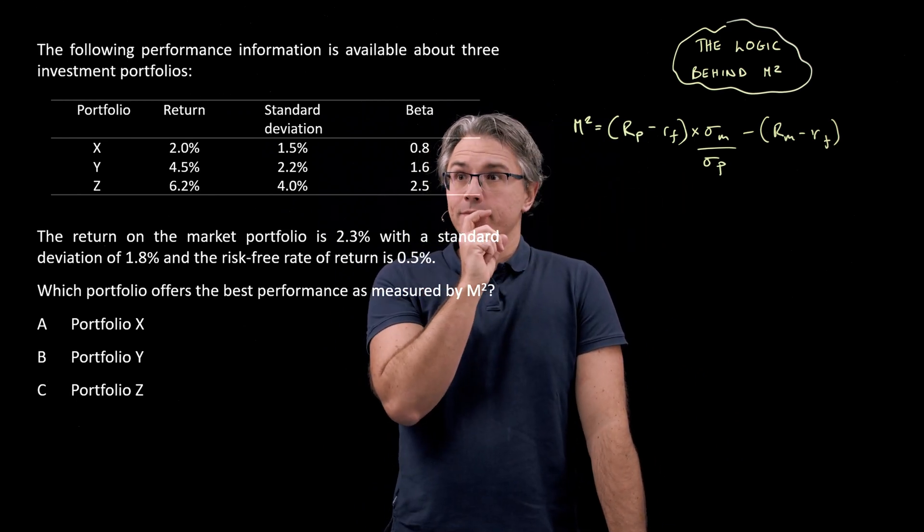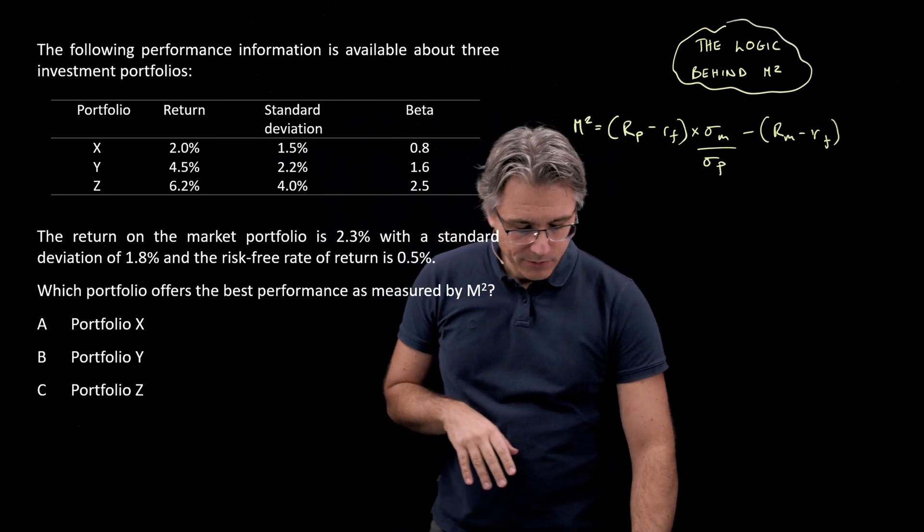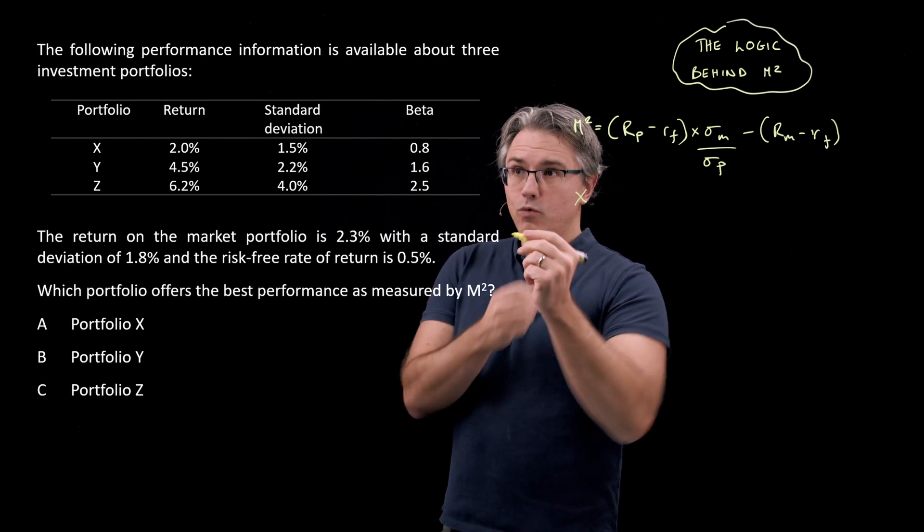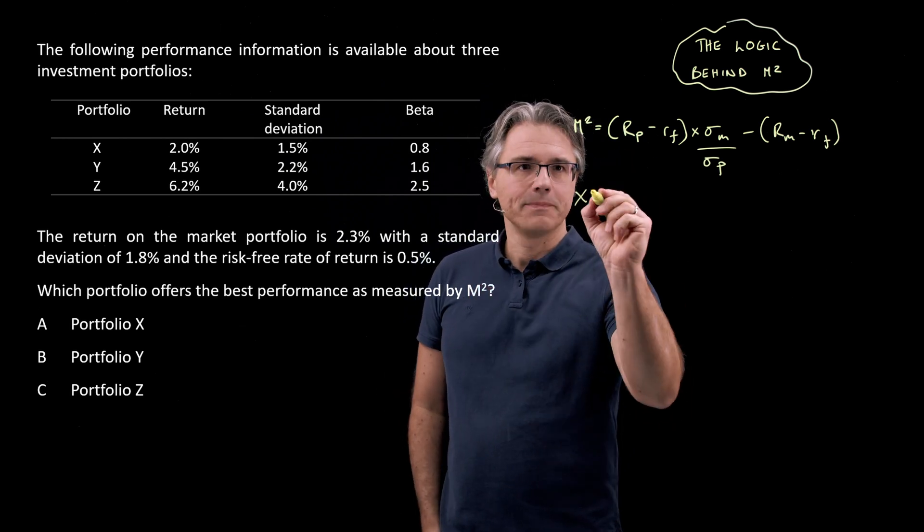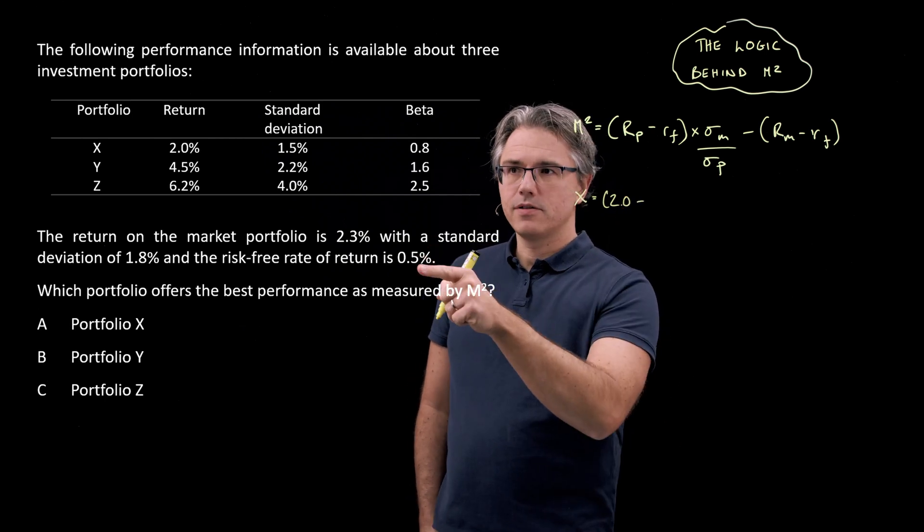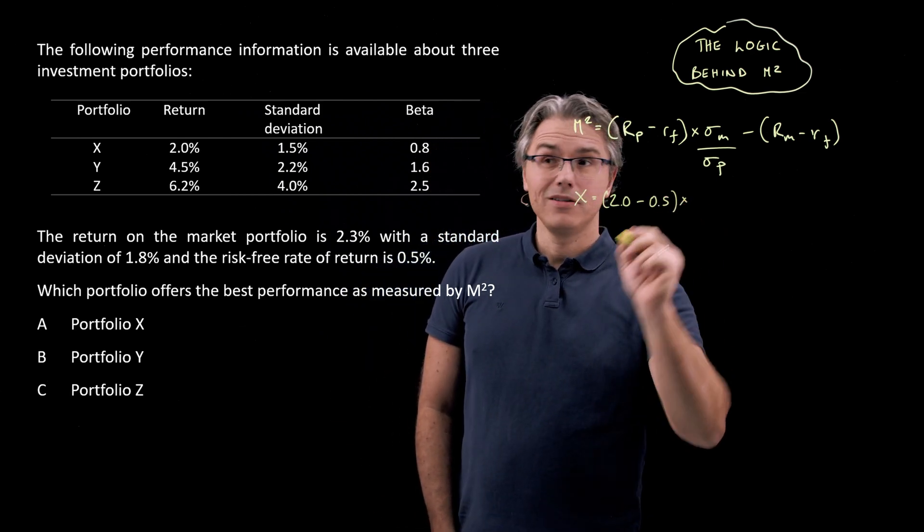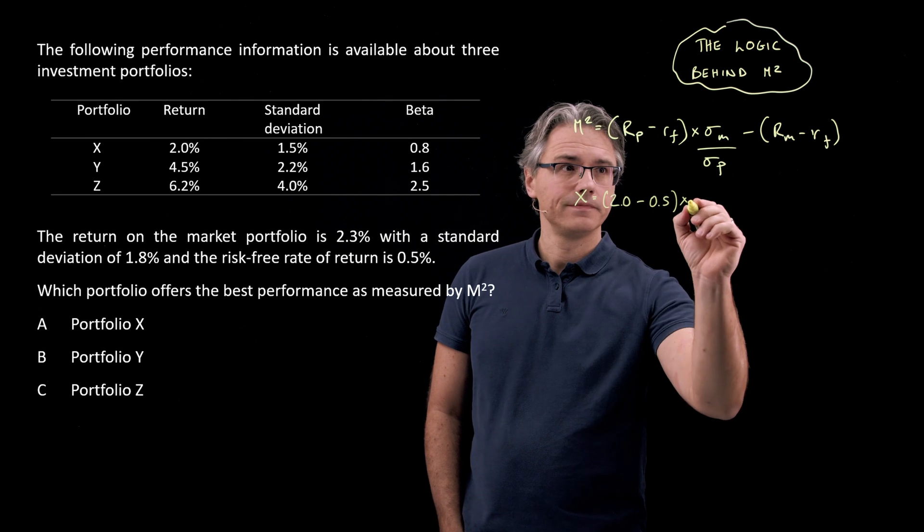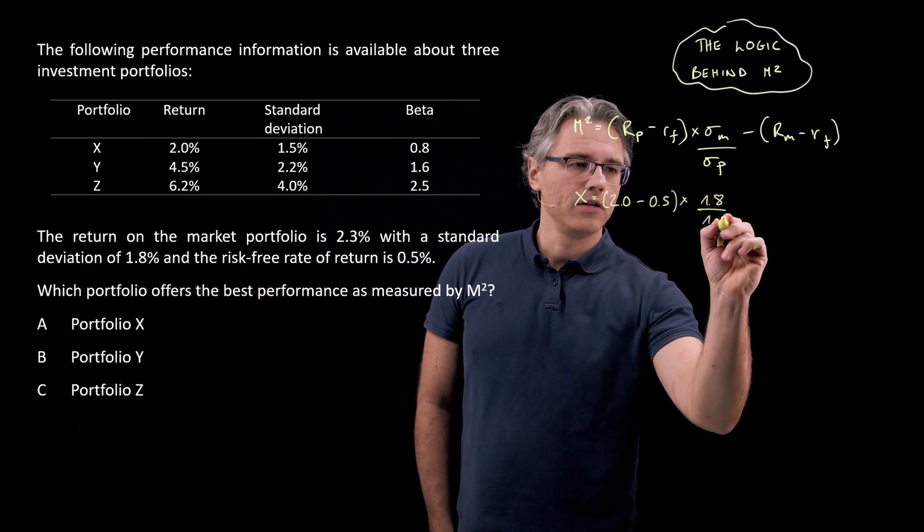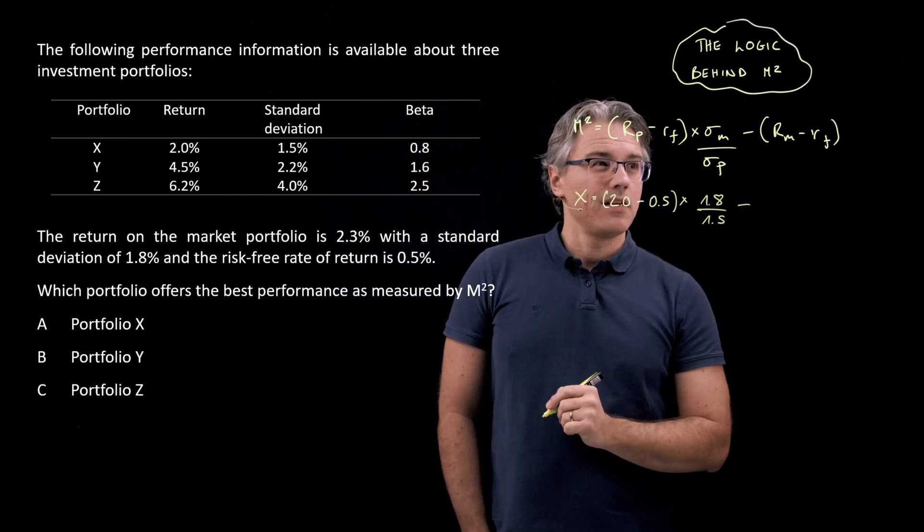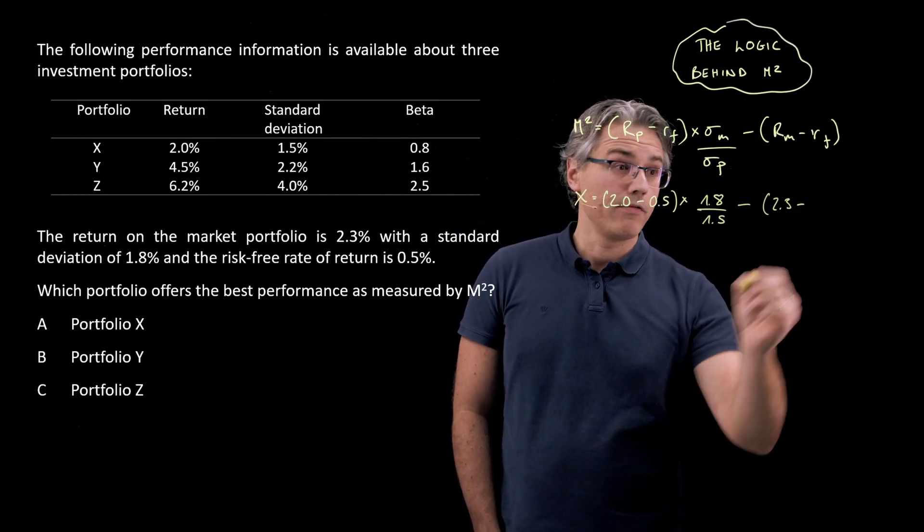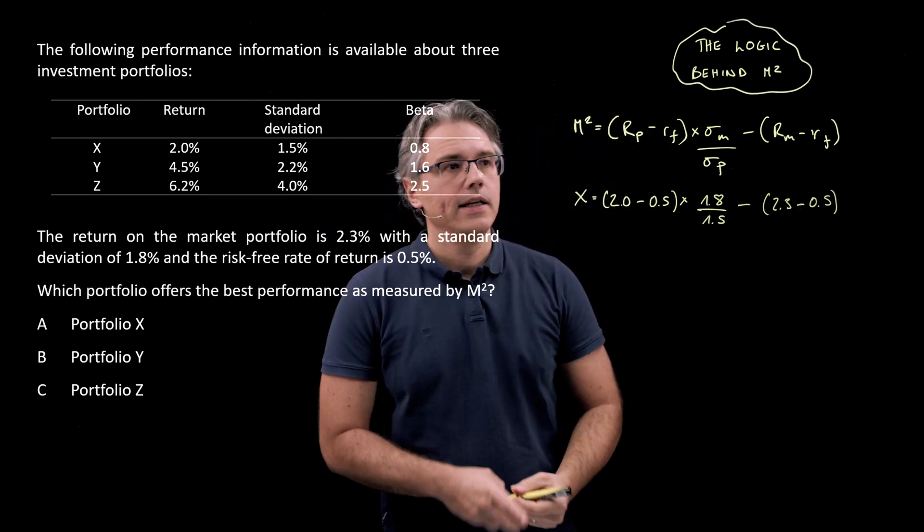In order to get the underlying logic right, I'm going to do the computation for the first one. So I'm going to do the computation in respect of portfolio X, and that's going to show you how this basically works, or what it's trying to tell us. So let's just plug in the numbers for X. It's going to be the return on that portfolio, so 2%, minus the risk-free rate, which is stated as 0.5, multiplied by the standard deviation of the market portfolio, 1.8, divided by 1.5, and minus R_M minus R_F, so the return on the market portfolio was 2.3 minus R_F, the risk-free rate, 0.5. Let's get the calculator out and see what this gives.